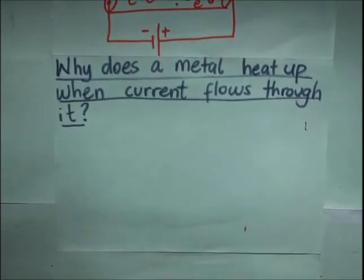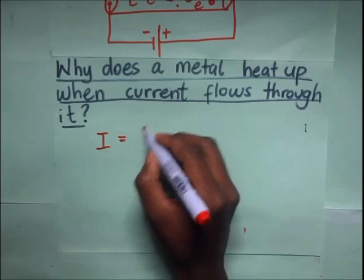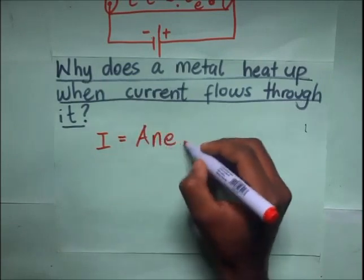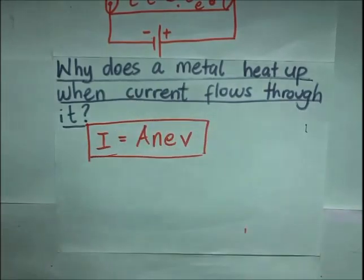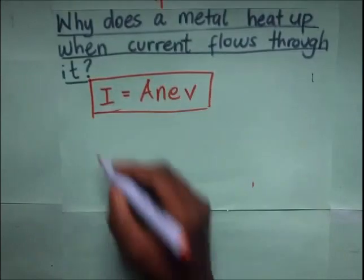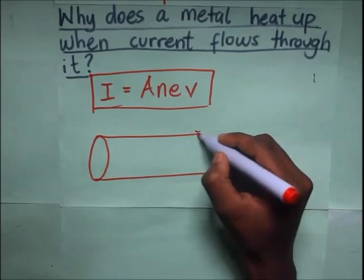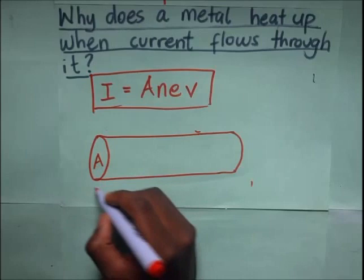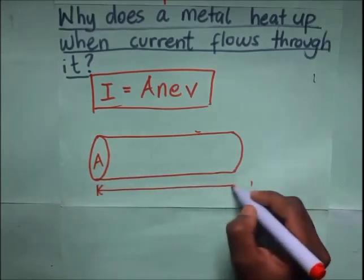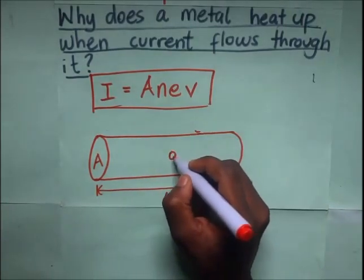Let's derive the formula: current is going to be equal to A·n·e·v. This is a formula we shall encounter later, but let's try to derive it now. Let's assume we have a conductor with a cross-sectional area A, a certain length L, and electrons drifting through it.